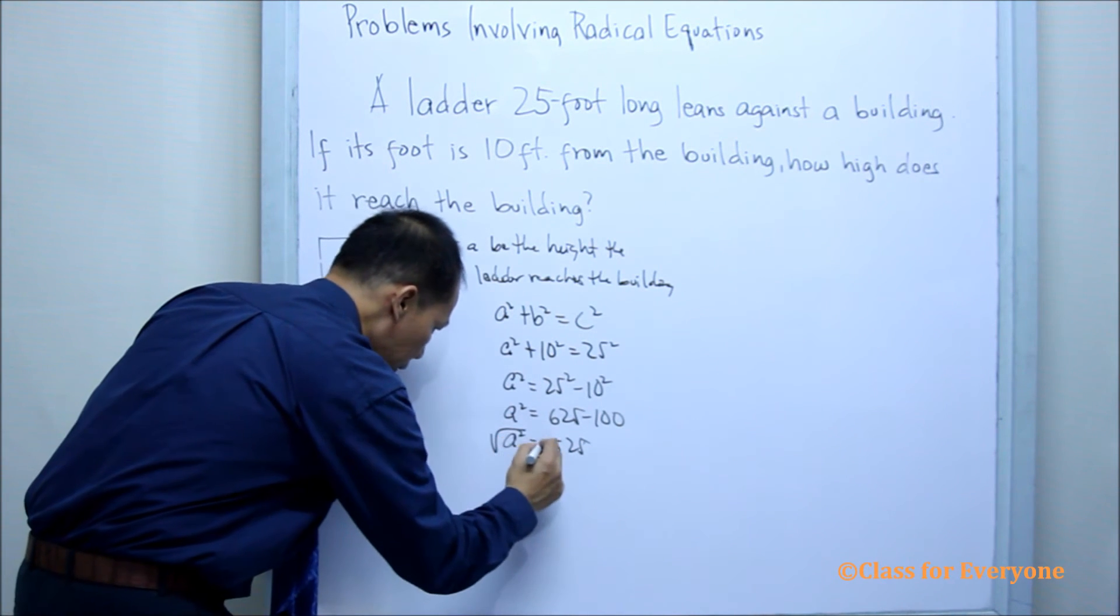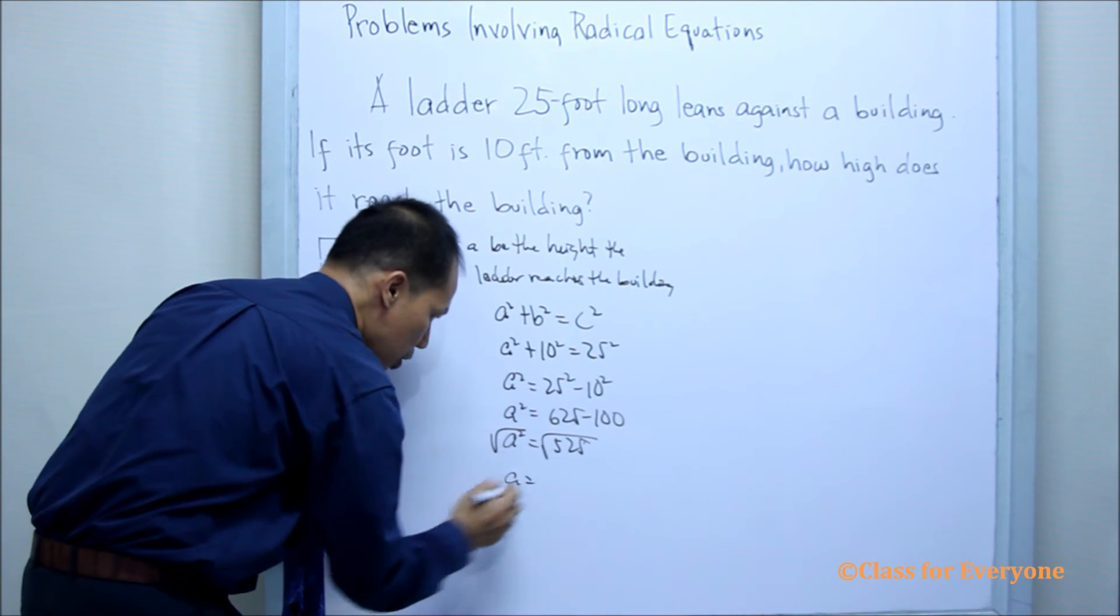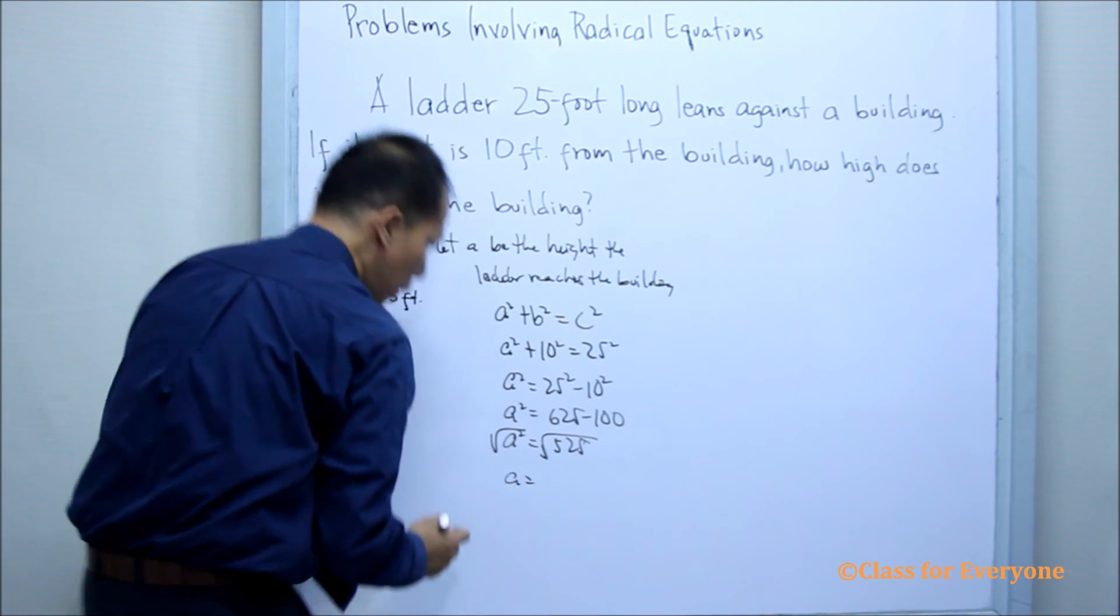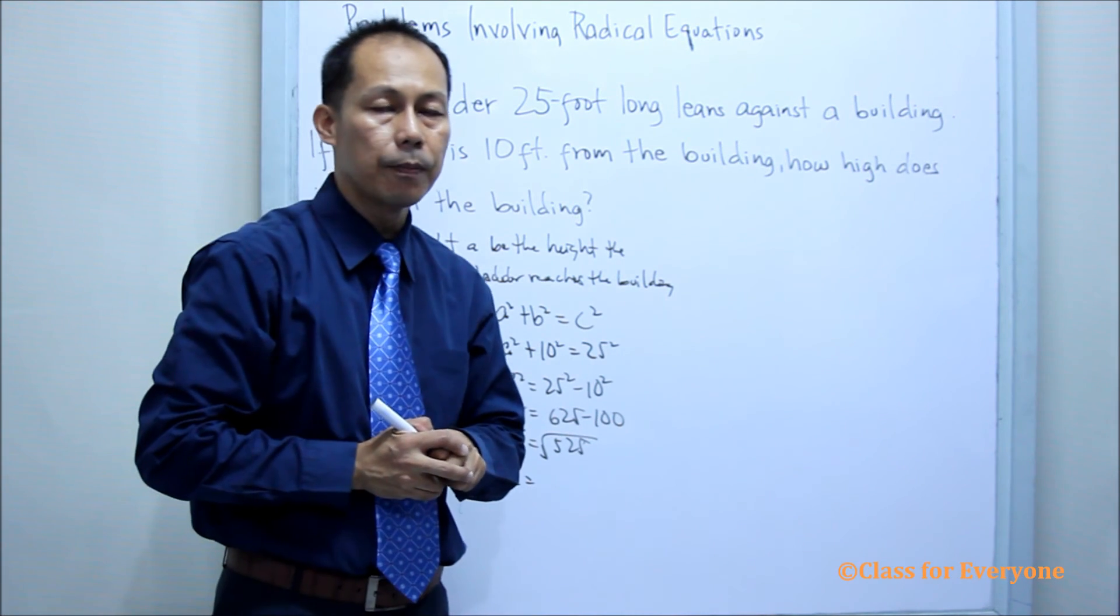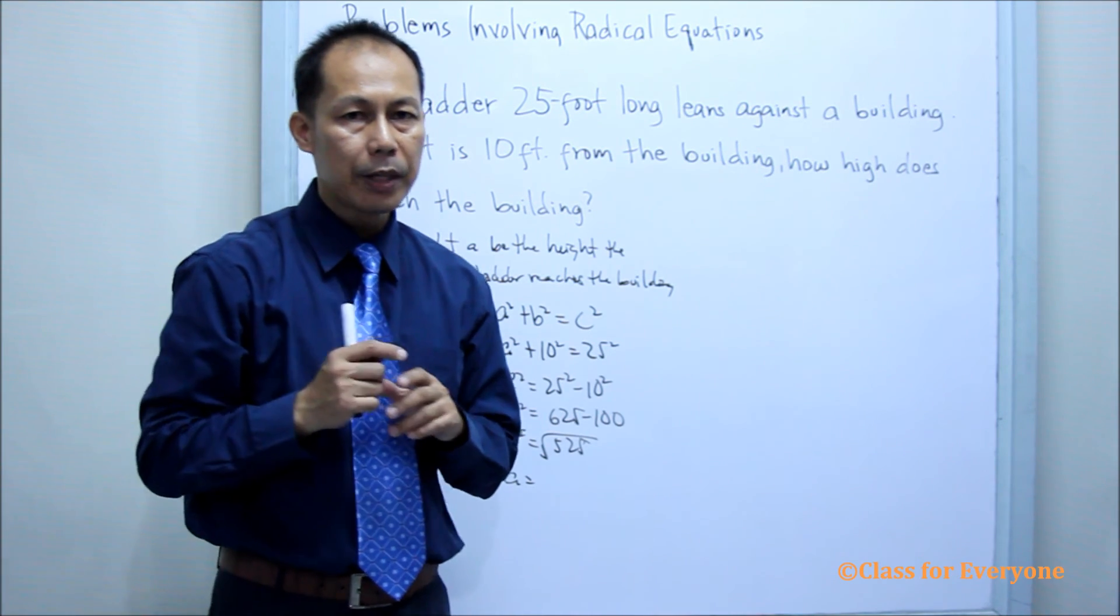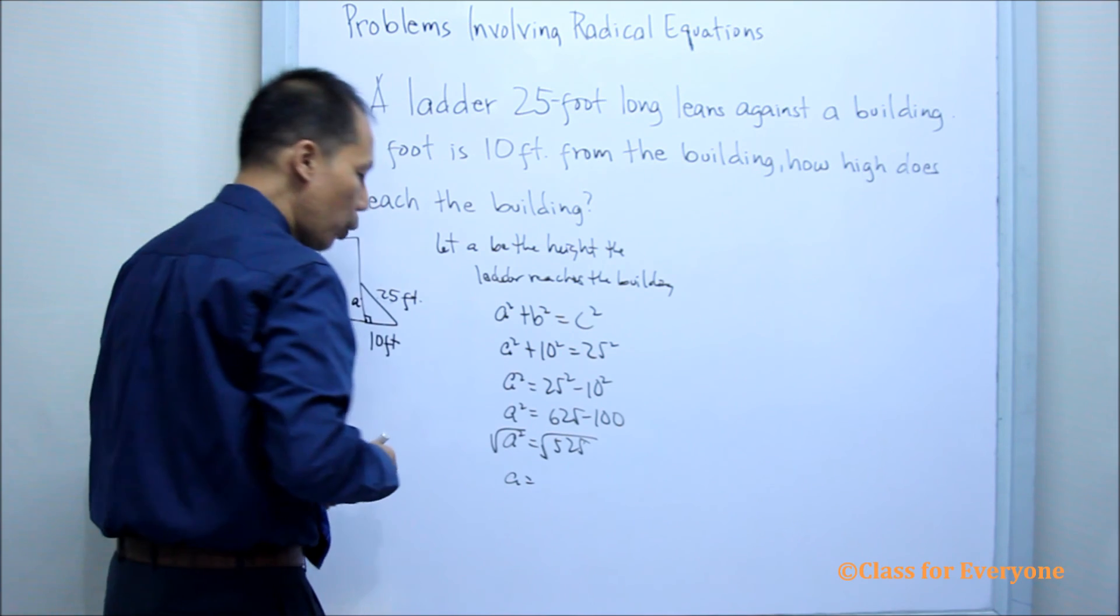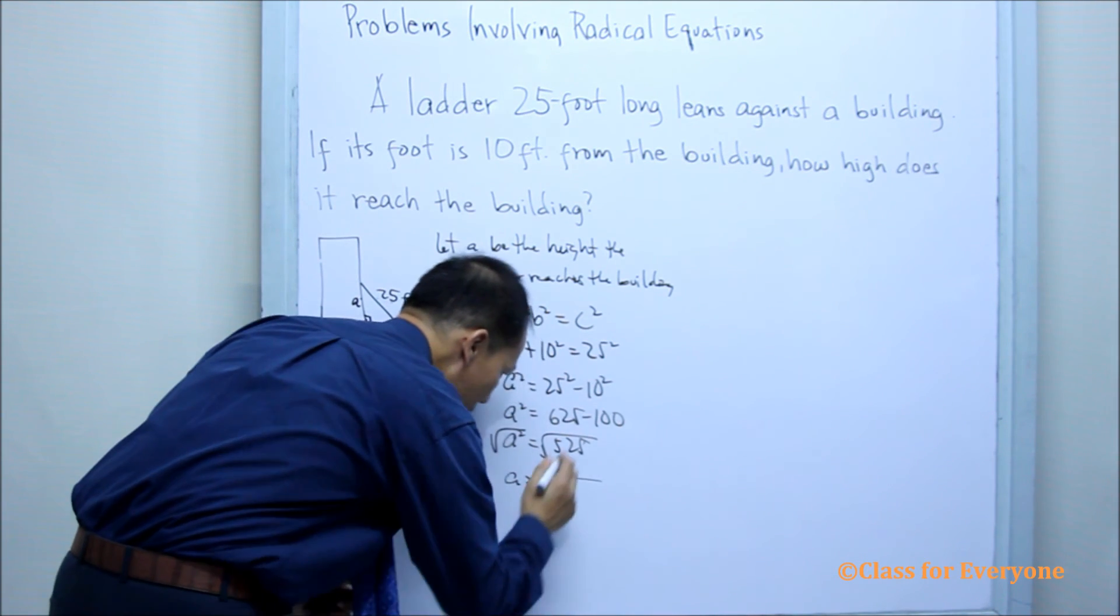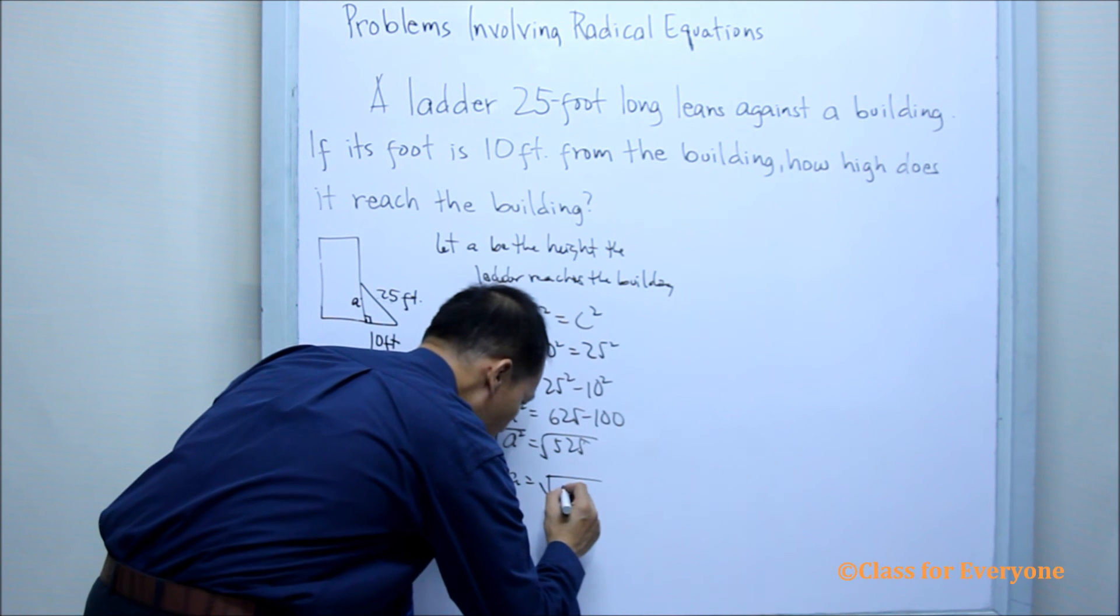Looking for the value of A, we get the square root of both sides. And then the square root of 525. 525 is not a perfect square, but we can find a factor of 525 which is a perfect square, and that is 25, because 525 is divisible by 25. When we divide 525 by 25, that is equal to 21.